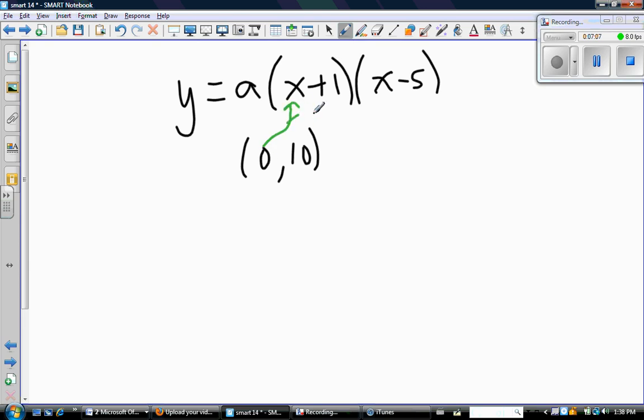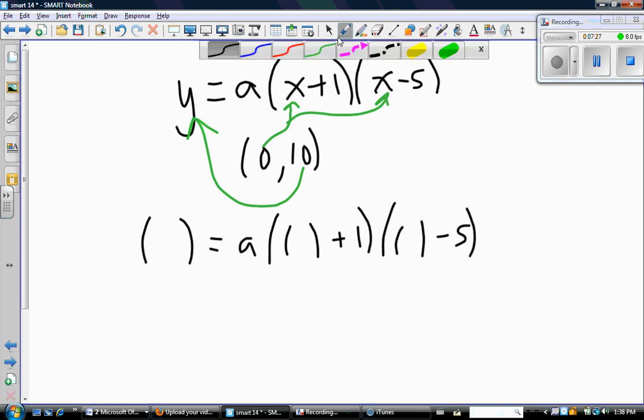And if I know the y-intercept, what I know is an x value and a y value that satisfy this equation. So that means I can do a substitution. Let x equal 0, and at the same time let y equal 10, and I'll be able to do algebra, and my only unknown will be a. So that's what we're going to do.